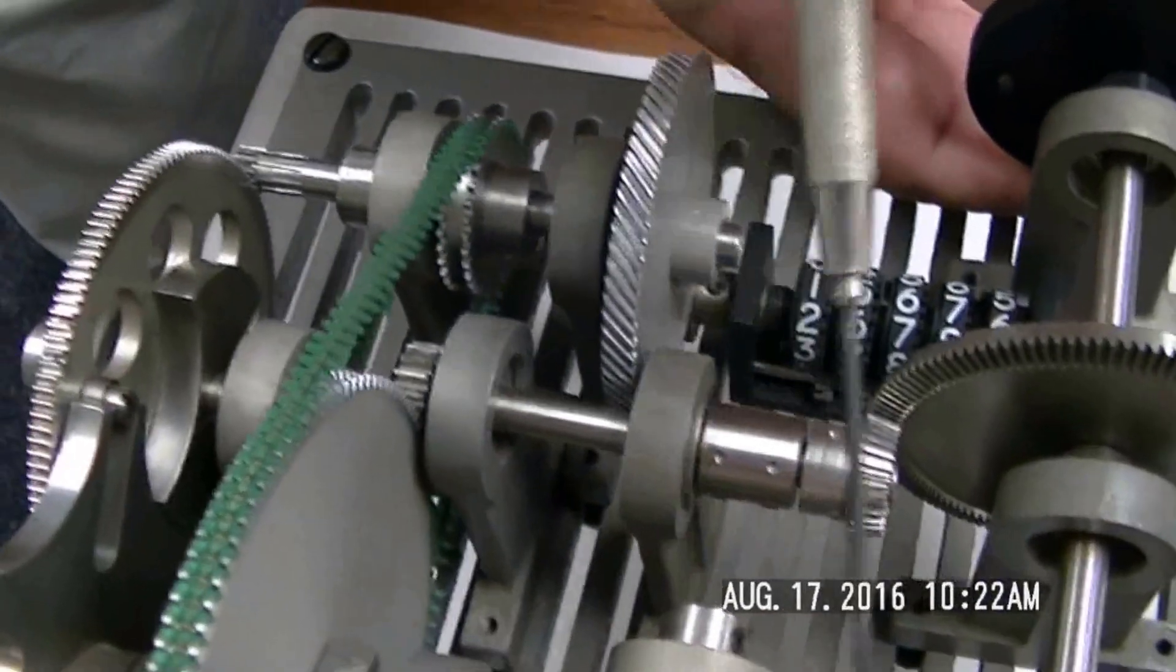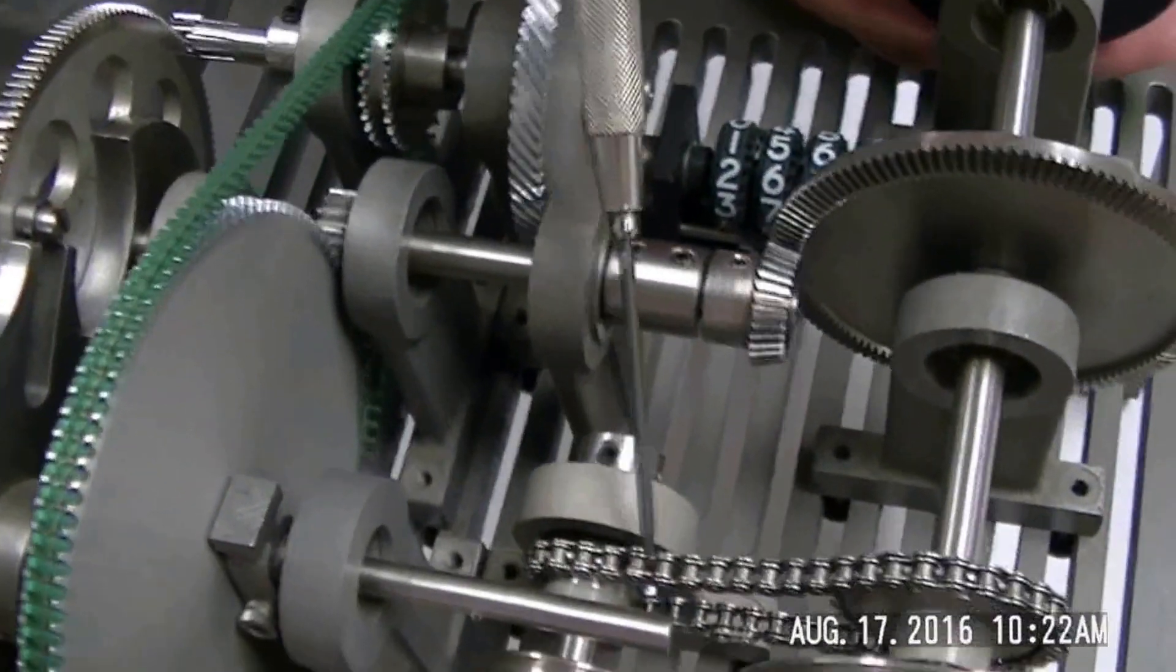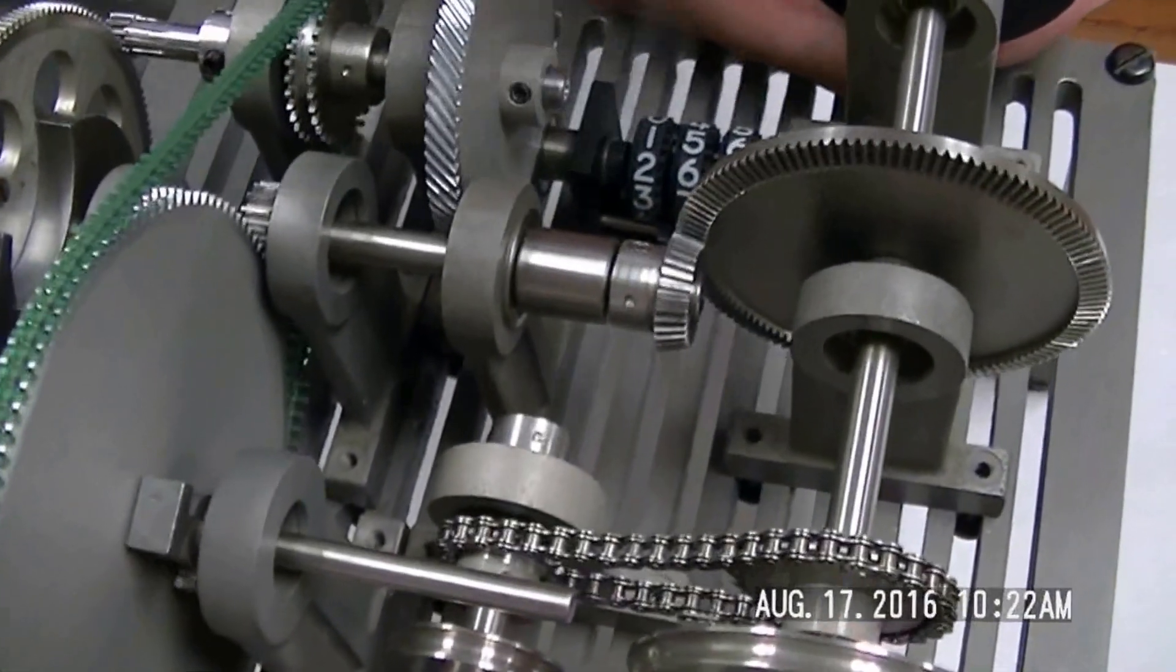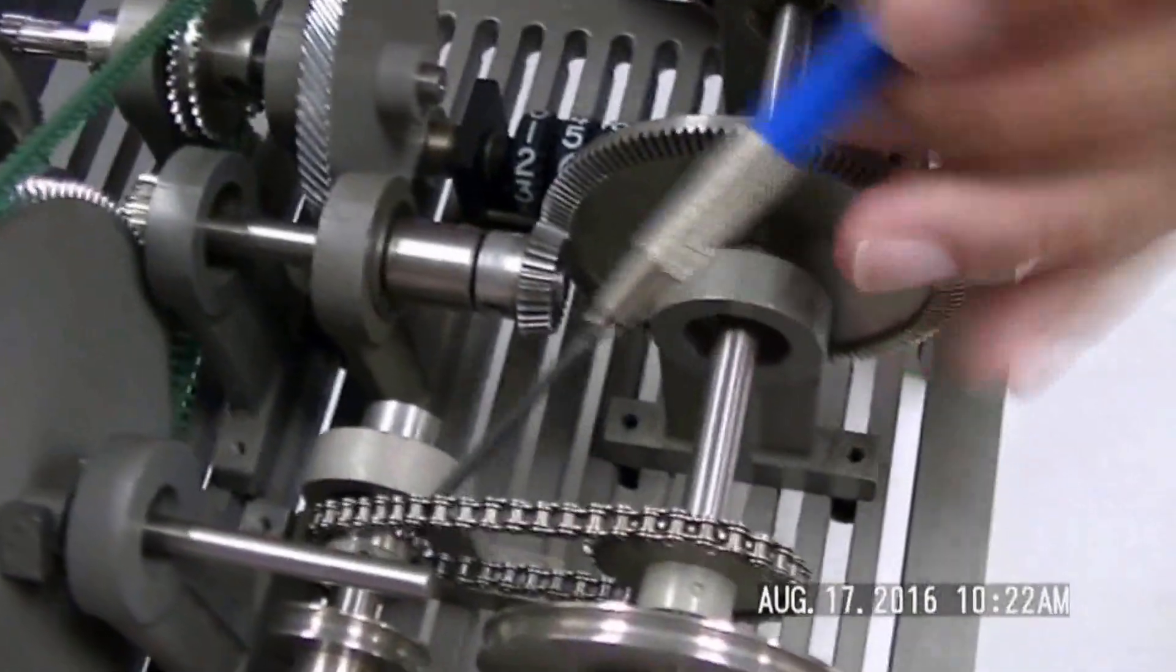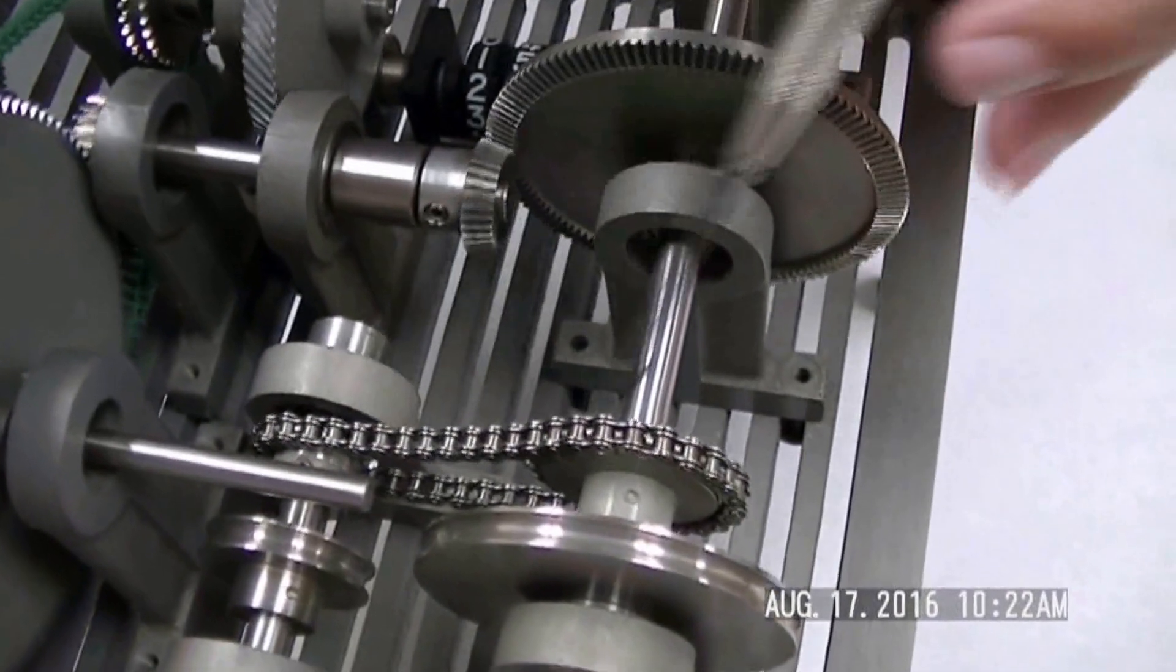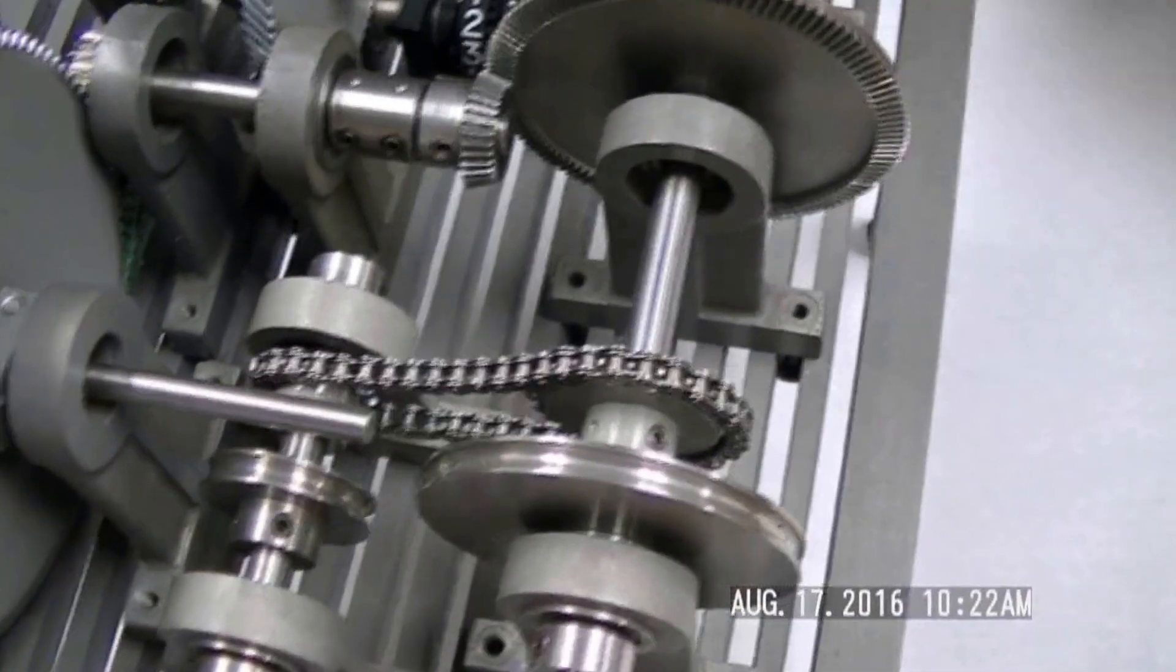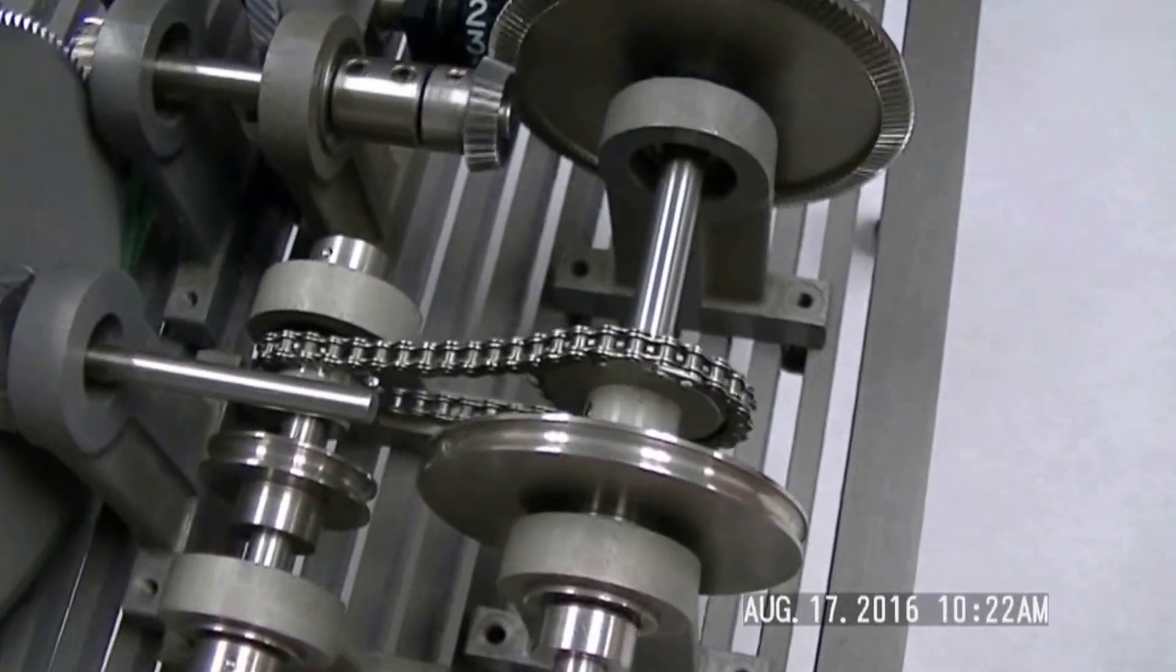Moving right along over here, we have a chain and sprocket setup. We can see this chain is supported on a sprocket underneath here. That sprocket drives this sprocket over here. So you can transfer motion from one shaft to the other.